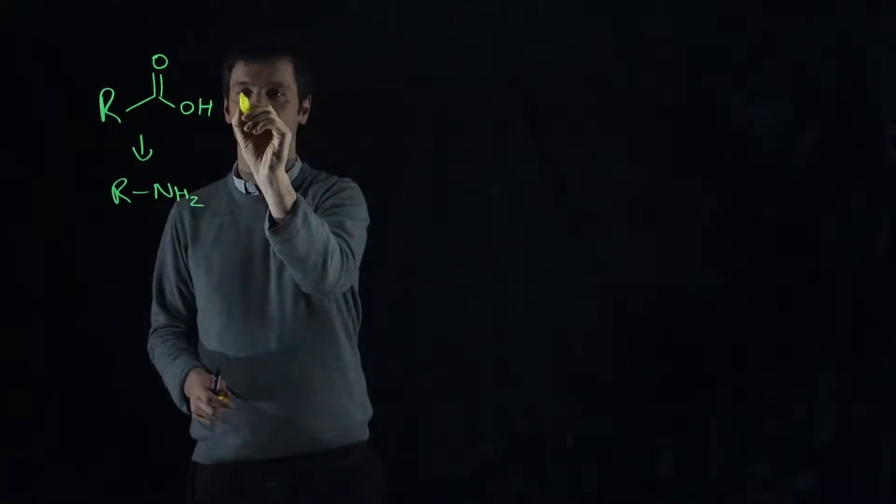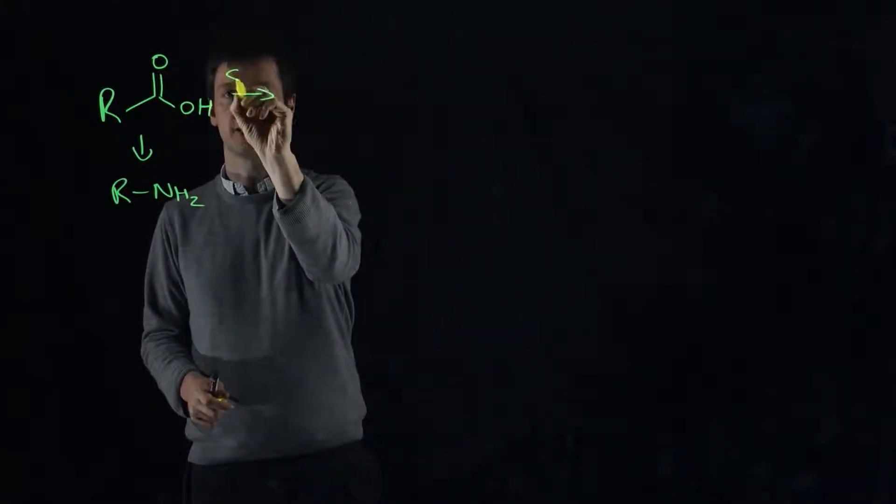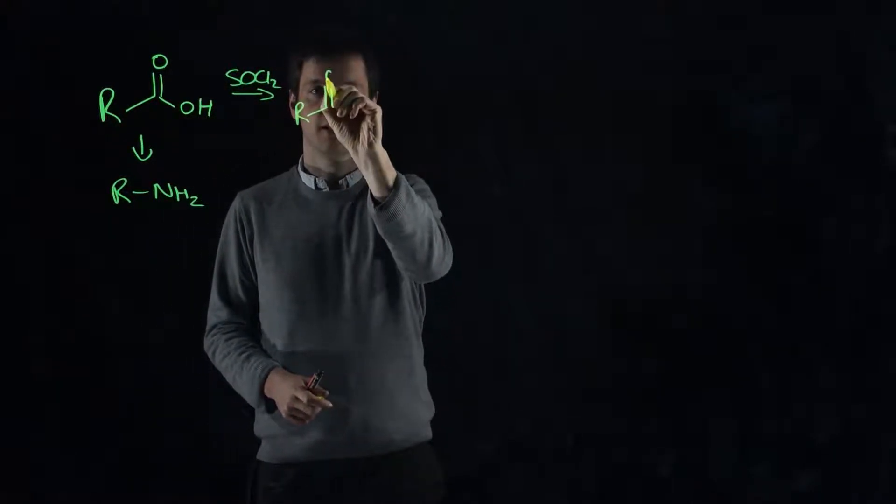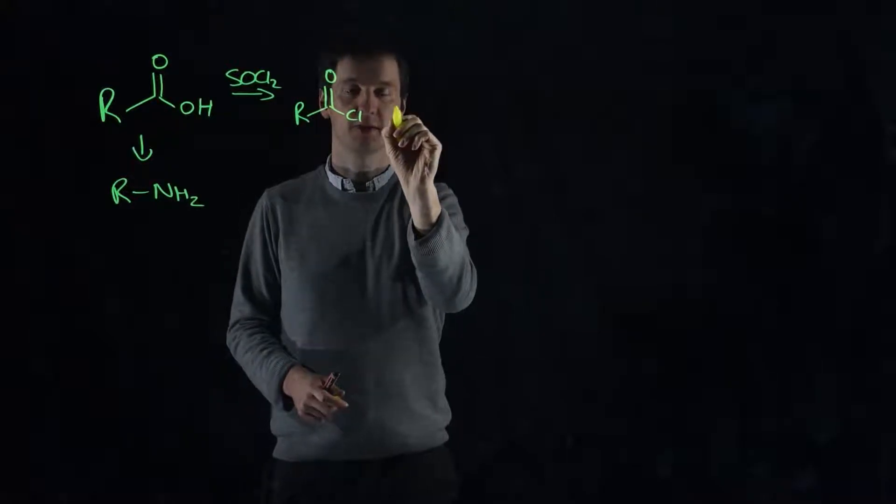How does it manage that? Well, the first step: if we treat that with something like thionyl chloride (SOCl2), we can make an acid chloride.